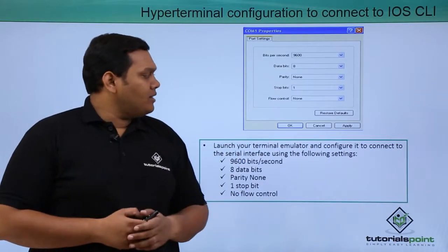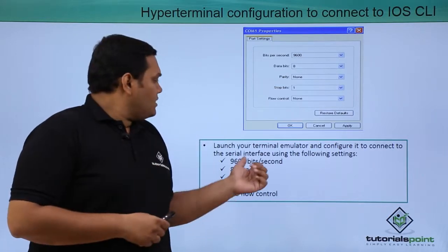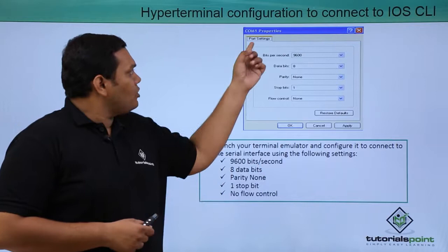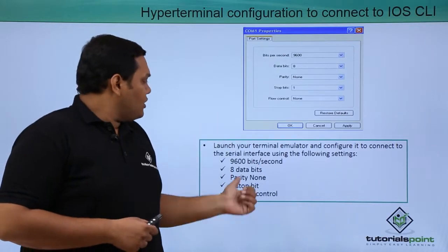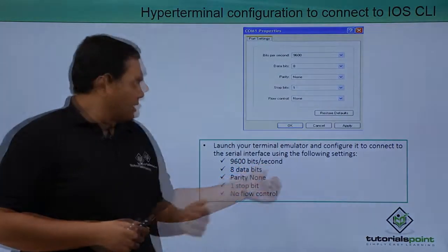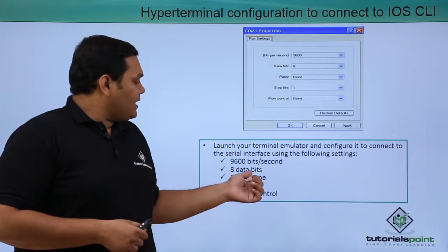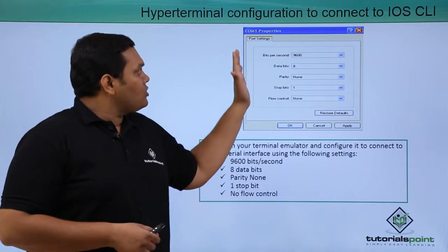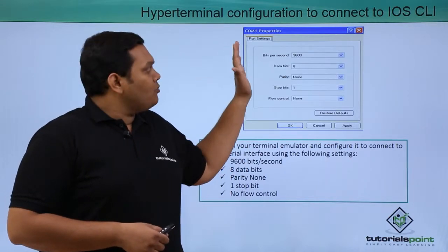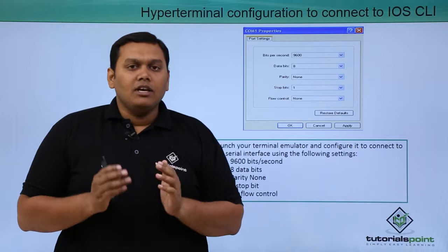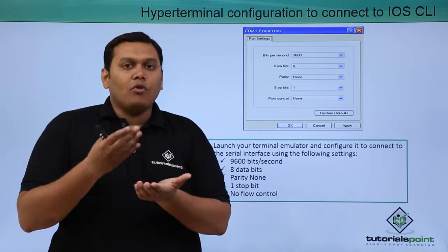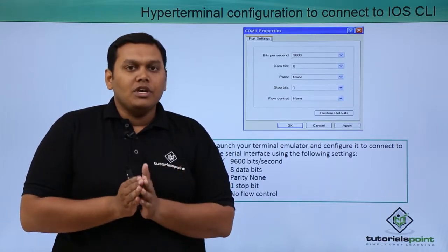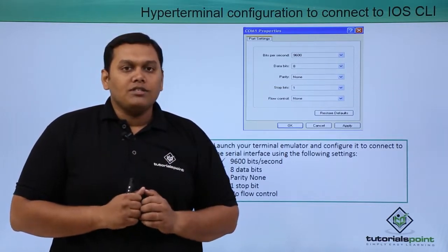Launch your terminal emulator and configure it to connect to the serial interface using the following settings: 9600 bits per second, 8 data bits, parity none, one stop bit, and no flow control. These are the properties of the console port. Using HyperTerminal with these settings, you connect to the console port to monitor, configure, and troubleshoot switches. This is all about Cisco IOS.